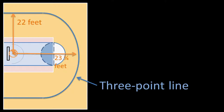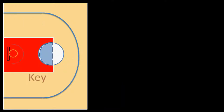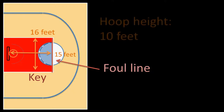The key, which is this red area in here, is 16 feet across, and it is 15 feet from the baseline to the foul line. If you've never played basketball before, I'll explain what the foul line is in the next video. The last distance is the height of the hoop, which is 10 feet off the ground.